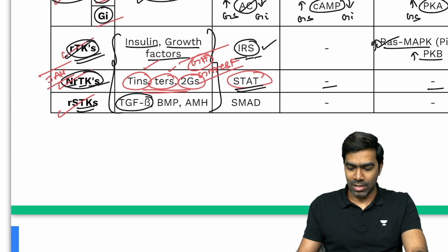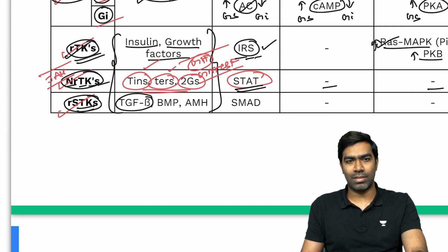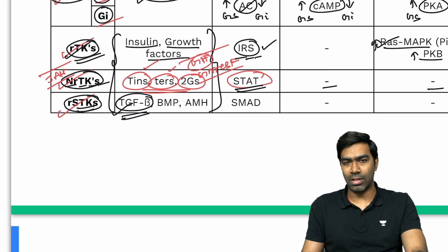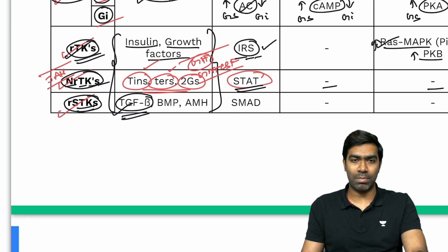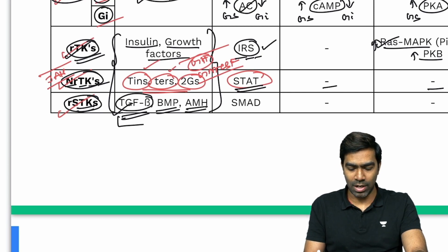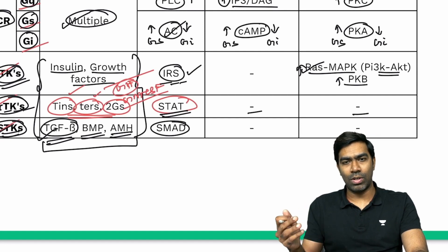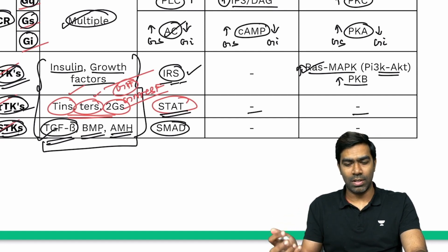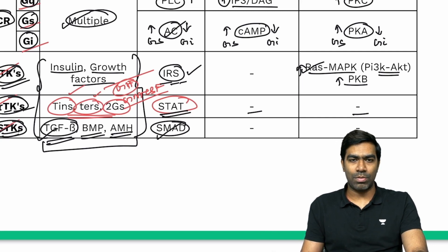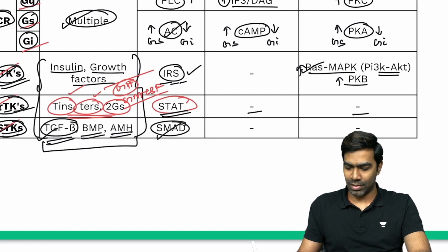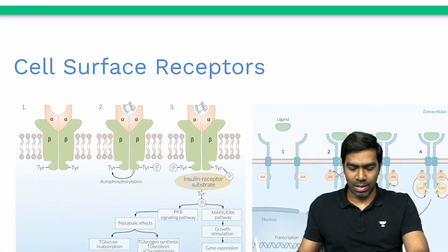RSTKs are receptor serine-threonine kinases. The most important ligand is TGF-beta, which is a growth factor that acts via RSTK rather than RTK. Other ligands include BMP (bone morphogenic protein) and anti-Müllerian hormone. The substrate for RSTKs is SMAD. Once activated, SMAD translocates directly to the nucleus without any additional second messenger, increasing or decreasing transcription of a particular gene.